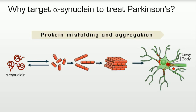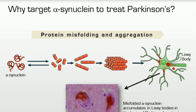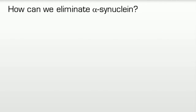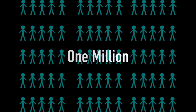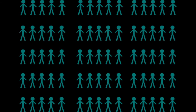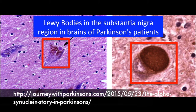Alpha-synuclein is a protein that misfolds in the brain of Parkinson's patients and accumulates into large aggregates called Lewy bodies. You can see these aggregates in the neurons in the brains of Parkinson's patients. Parkinson's disease is characterized by the accumulation of Lewy bodies in the substantia nigra. Lewy bodies are abnormal buildups of alpha-synuclein found within neurons that contribute to disease.